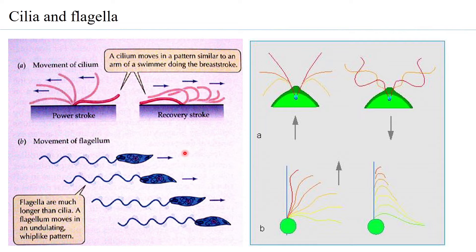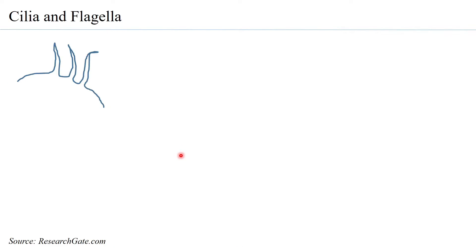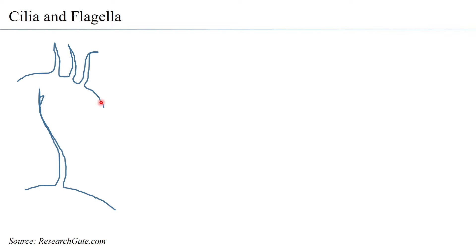Within cilia you will find microtubules present — the same arrangement as in flagella, though flagella are much longer. These microtubules are arranged in a particular pattern and originate from basal bodies, also called microtubule organizing centers. The basal bodies have a 9 plus 0 arrangement of microtubules, while the cilia and flagella have a 9 plus 2 arrangement.